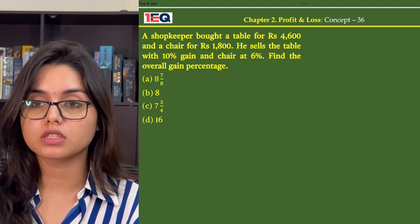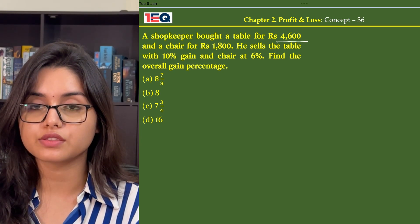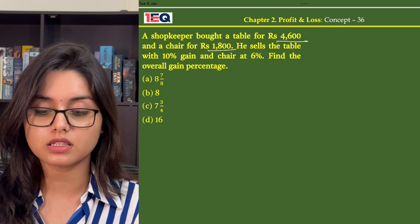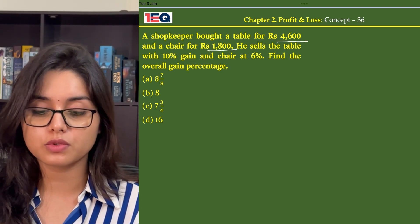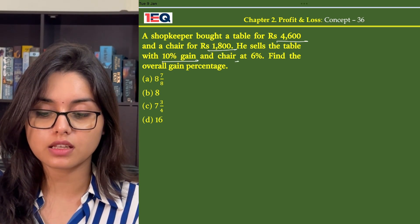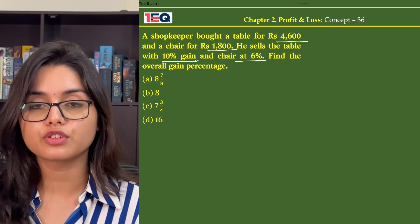The shopkeeper bought a table for Rs 4,600 and a chair for Rs 1,800. He sells the table with 10% gain and chair at 6%. Find the overall gain percentage.